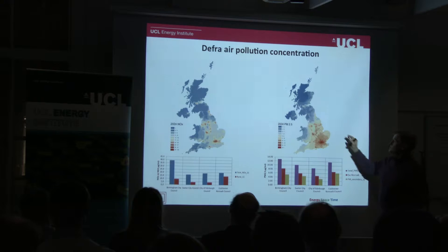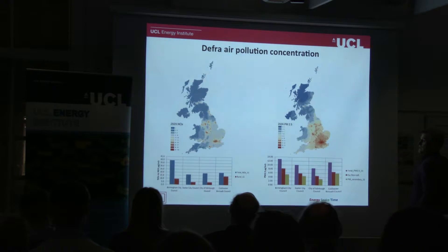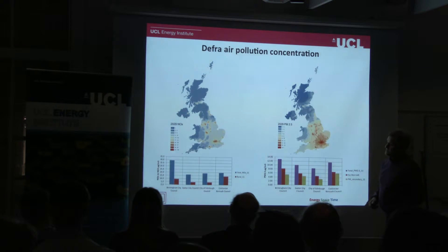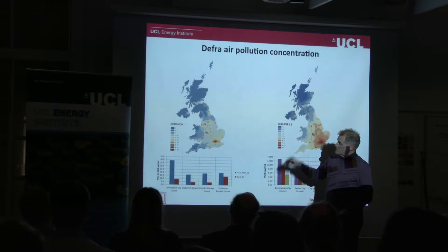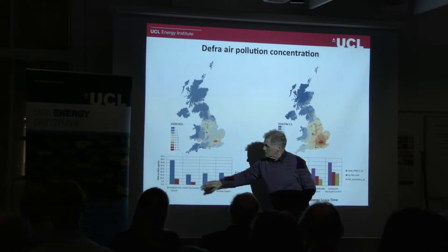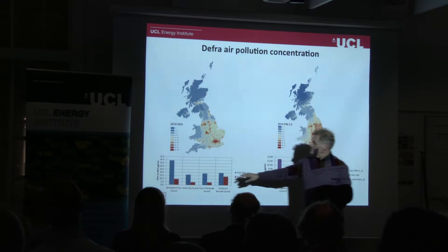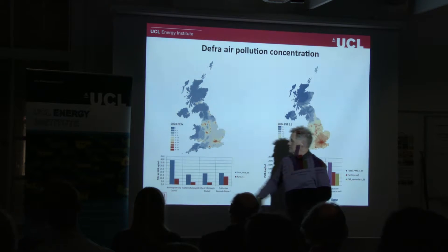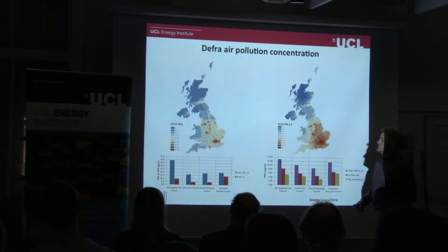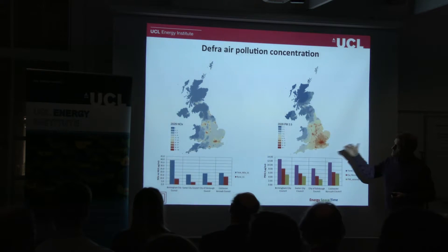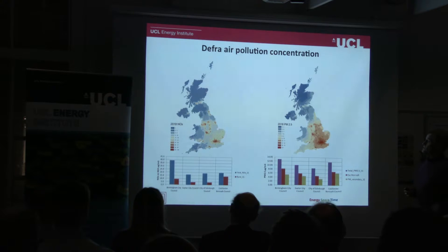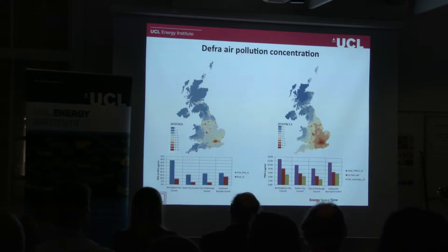It's much more dispersed, and indeed a lot of the particulate matter here comes from Europe, and even China, while in the northern hemisphere. Because of this, when you look at the partitioning of city and external sources — here we have four cities: Birmingham, Exeter, Edinburgh, and Colchester — you get very different proportions of external emissions affecting concentrations and those which are controlled and emitted within the city.